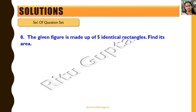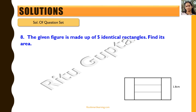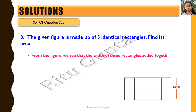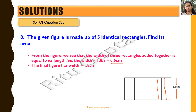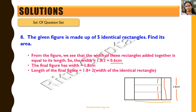The next question shows a figure made up of 5 identical rectangles where one side is given as 1.8 cm. We need to find the area. From the figure, the width of three rectangles placed together equals 1.8 cm, so the width of each rectangle is 1.8 ÷ 3 = 0.6 cm. The final figure has width 1.8 cm and length 1.8 + 2 × 0.6 = 3 cm. The area is 3 × 1.8 = 5.4 cm².